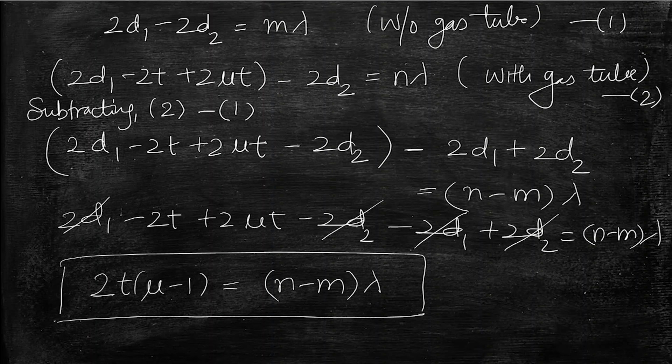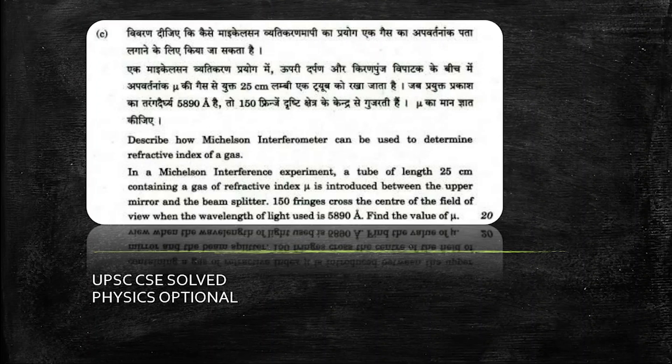So let's see the numerical. So now we are given a tube of length 25 cm containing a gas of refractive index mu.